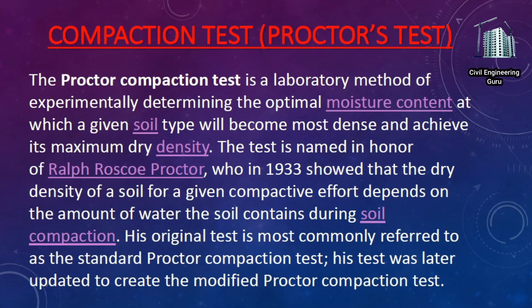The next type is the compaction test — Proctor's test. The Proctor compaction test is a laboratory method of experimentally determining the optimal moisture content at which a given soil type will become most dense and achieve its maximum dry density. The test is named in honor of Ralph Roscoe Proctor, who in 1933 showed that the dry density of a soil for a given compactive effort depends on the amount of water the soil contains during compaction. His original test is referred to as the standard Proctor compaction test, and was later updated to create the modified Proctor compaction test.